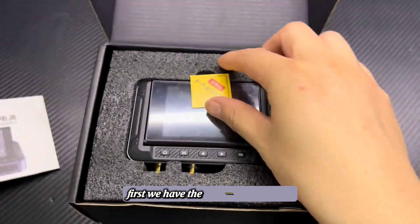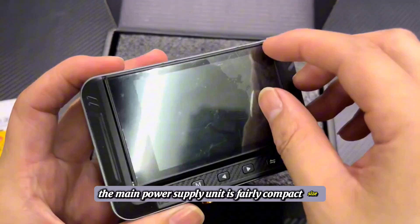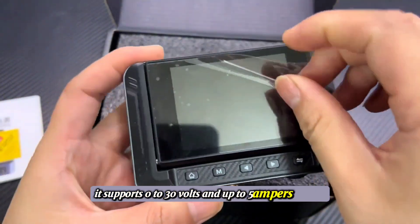First, we have the instruction manual and the certificate of conformity. The main power supply unit is fairly compact size. It supports 0 to 30 volts and up to 5 amperes current.